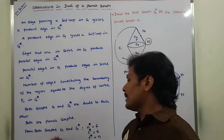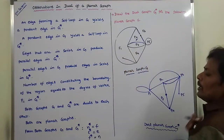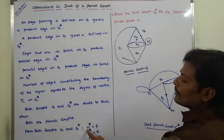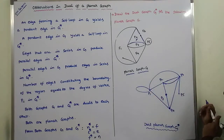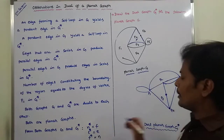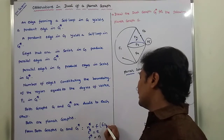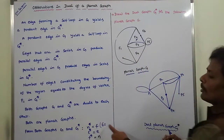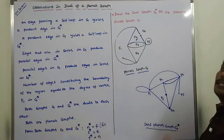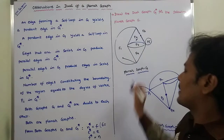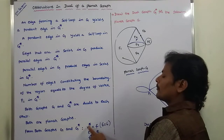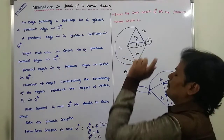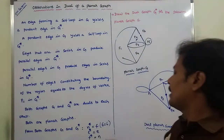Eighth point, from both graphs G and G star: N star equals F. N star is the number of vertices in G star, which is 6. F is the number of regions in G, which is also 6. So the number of vertices in the dual graph equals the number of regions in G — that is, 6 equals 6.